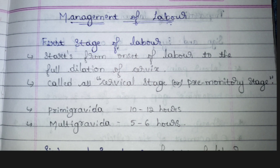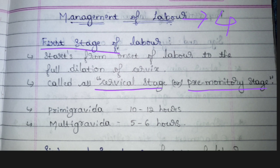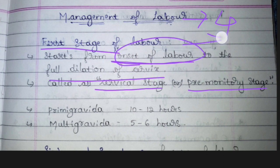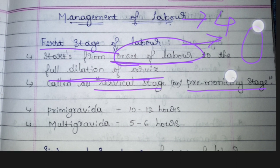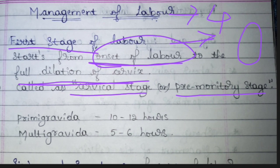Management of labor consists of four stages. The first stage is also known as the cervical stage or premonitory stage. It begins from the onset of labor — when the delivery pain begins — to the full dilation of the cervix. When the pain begins and the cervix opens fully, that entire period is considered the first stage.